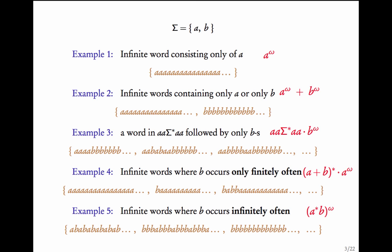A short recap of omega regular expressions. Look at this language which consists of a single infinite word made of just a's. This will be denoted as a^ω. Then a^ω + b^ω is the set of two words: the first word consists only of a's and the second word has only b's. Another example has some regular expression followed by only b's — that is, words of this regular language followed by only b's. The expression is going to be aa·σ*·aa · b^ω.